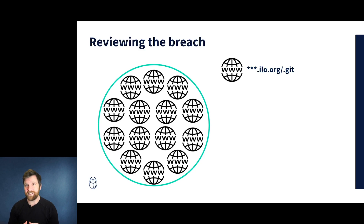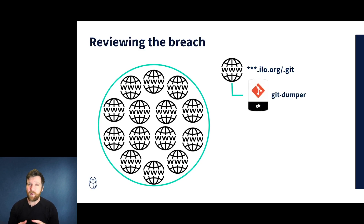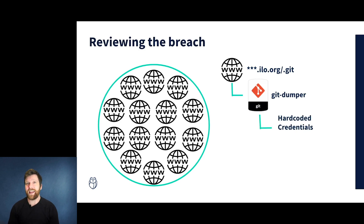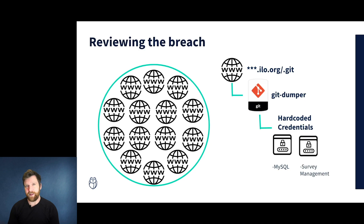They were able to access a .git repository on one of the subdomains belonging to ilo.org, the International Labor Organization. Using a tool called git-dumper, they were able to download the entire contents of this Git repository and scan it for vulnerabilities. They identified hard-coded credentials that gave them access, allowing them to take over a MySQL database belonging to a WordPress application and also an internal survey management platform.